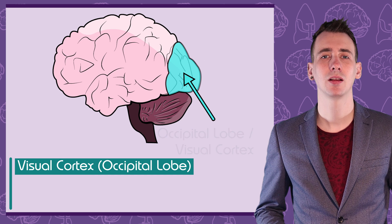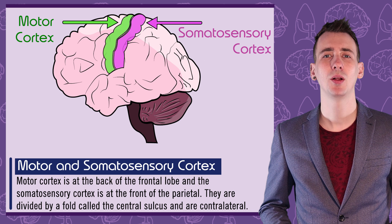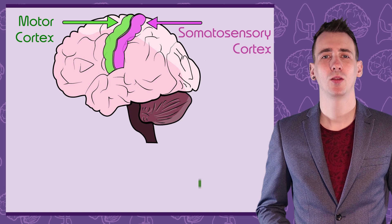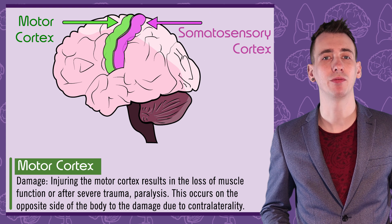The motor and somatosensory cortex. These structures run alongside a fold in the brain called the central sulcus, which separates the frontal lobe from the parietal lobe. The motor cortex is found in the frontal lobe and the somatosensory in the parietal. The motor cortex in each hemisphere plans and carries out voluntary motor movements on the opposite side of the body. Damage to one side of the motor cortex can lead to loss of fine muscle function or even paralysis on the opposite side of the body.